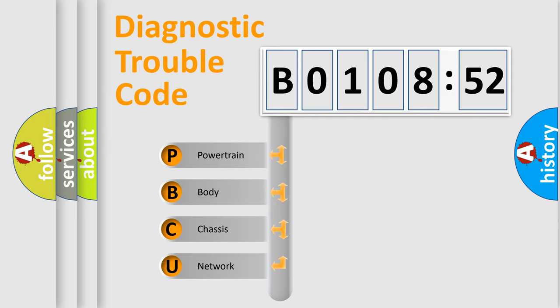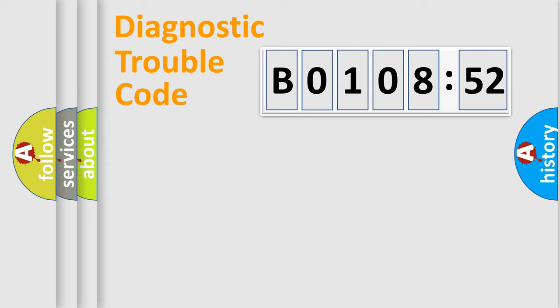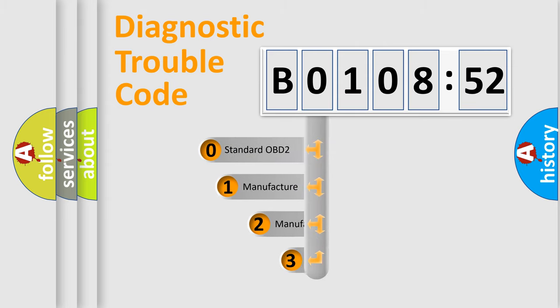We divide the electric system of automobile into four basic units: Powertrain, Body, Chassis, and Network. This distribution is defined in the first character code.